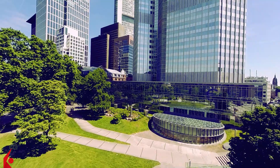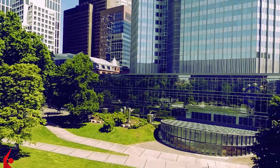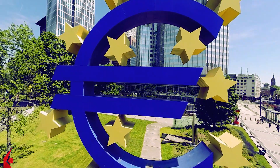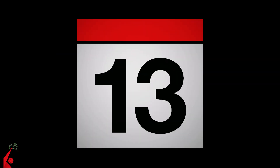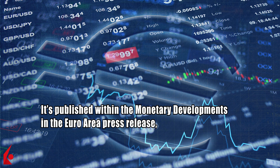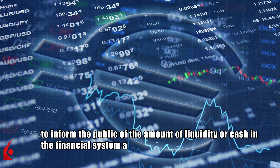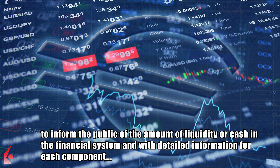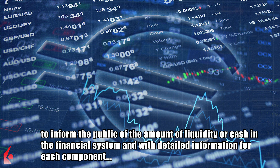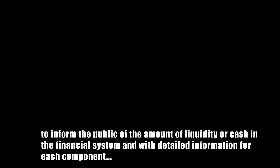The ECB also regulates banks, has access to bank information, and publishes data on the banking system. These data are released on or around the 28th day of each month, at generally 9 a.m. London time. It's published within the Monetary Developments in the Euro Area press release, to inform the public of the amount of liquidity or cash in the financial system, with detailed information for each component. Historical data is also available.